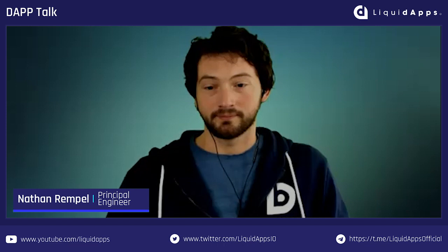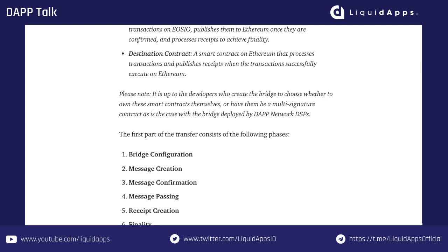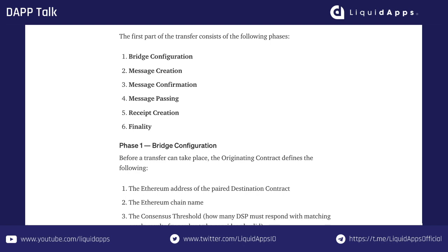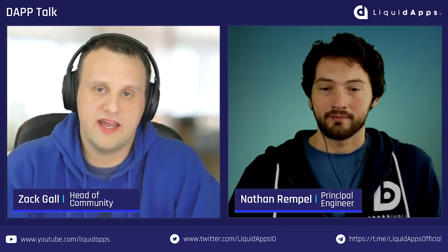There are six steps for a transaction from EOSIO to Ethereum: bridge configuration, message creation, message confirmation, message passing, receipt creation, and finality. Let's walk through each step and explain what's exactly happening underneath the hood. Let's start with bridge configuration — if I'm a developer and I want to deploy a bridge, walk me through how to get this thing configured.